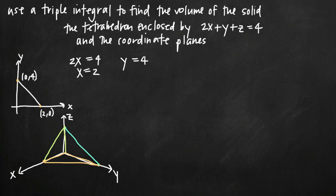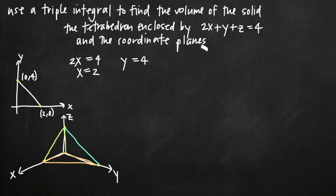To use a triple integral to find the volume of this solid, we need to do a couple of things. First, we need to find limits of integration for x, y, and z. Then we need to decide the order of integration — whether to integrate first with respect to z, y, or x — and find corresponding limits of integration for each variable.